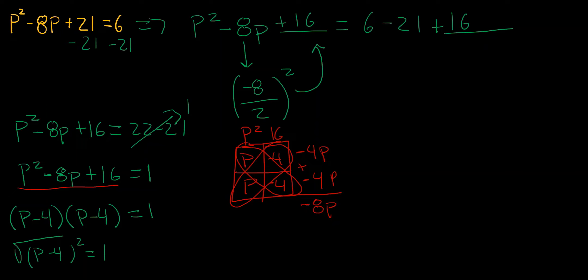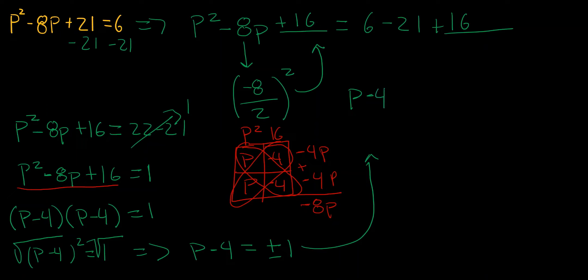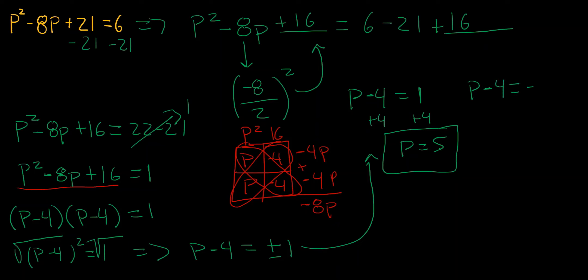Taking the square root of both sides gives p - 4 = ±1. For the positive case, p - 4 = 1, so adding 4 to both sides gives p = 5. For the negative case, p - 4 = -1, and adding 4 to both sides gives p = 3. So our two solutions are p = 5 and p = 3.